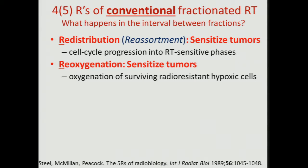The second R is reoxygenation, and we're going to explore this in much more detail when we talk about vascular effects and hypoxia. Your first dose kills off the radiation-sensitive cells that are well oxygenated, leaving the radiation-resistant cells in a more hypoxic environment. In that interval, you get reoxygenation and oxygen diffusion. Those hypoxic cells then become reoxygenated and are therefore more sensitive to the second fraction. With your full-course treatment, you get good reoxygenation and good cell killing. That's the benefit of the interval in your conventional fractionation scheme.